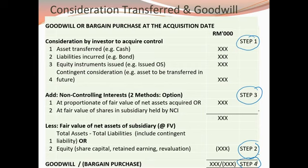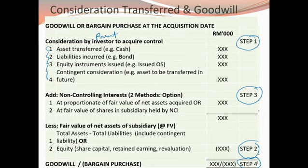From step one, you calculate the consideration transferred by the investor or parent to acquire control of the subsidiary. This includes assets transferred or liabilities incurred by the investor. The parent may also have equity instruments issued as part of the consideration transferred, as well as contingent consideration. Totaling all of these gives you the consideration transferred — the purchase price — which can come from cash, liabilities incurred, bonds issued to raise money, or shares issued by the parent.